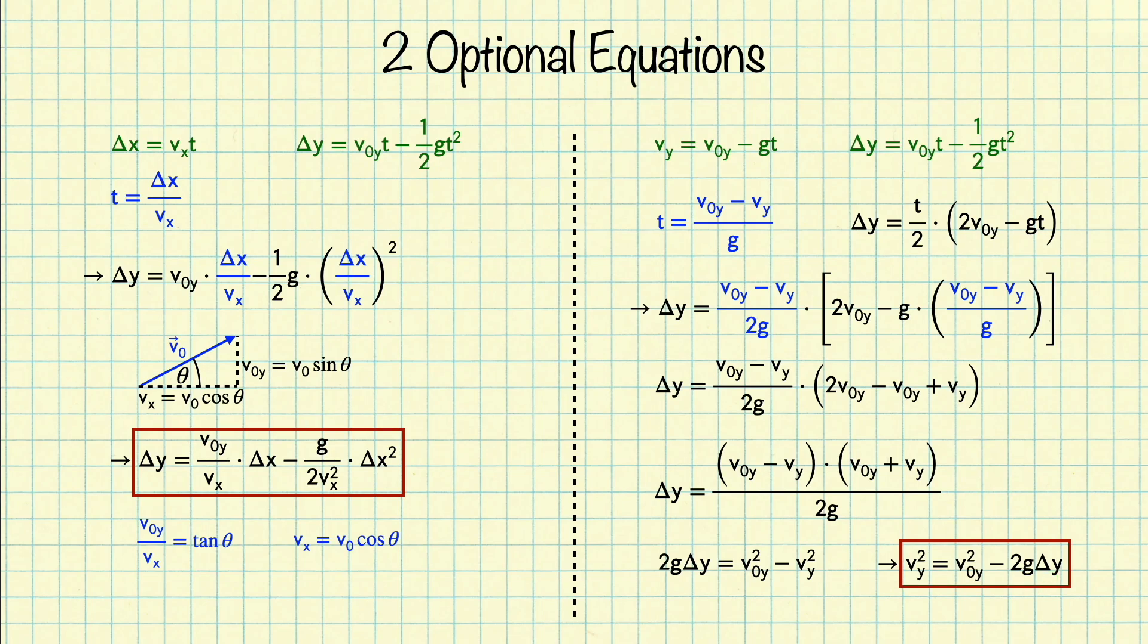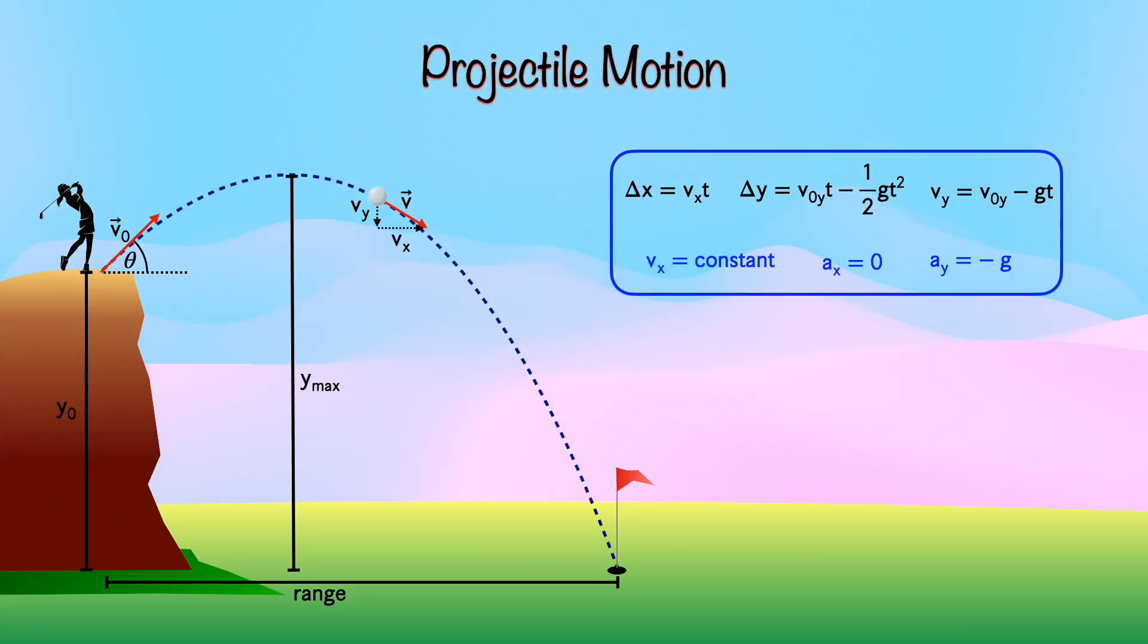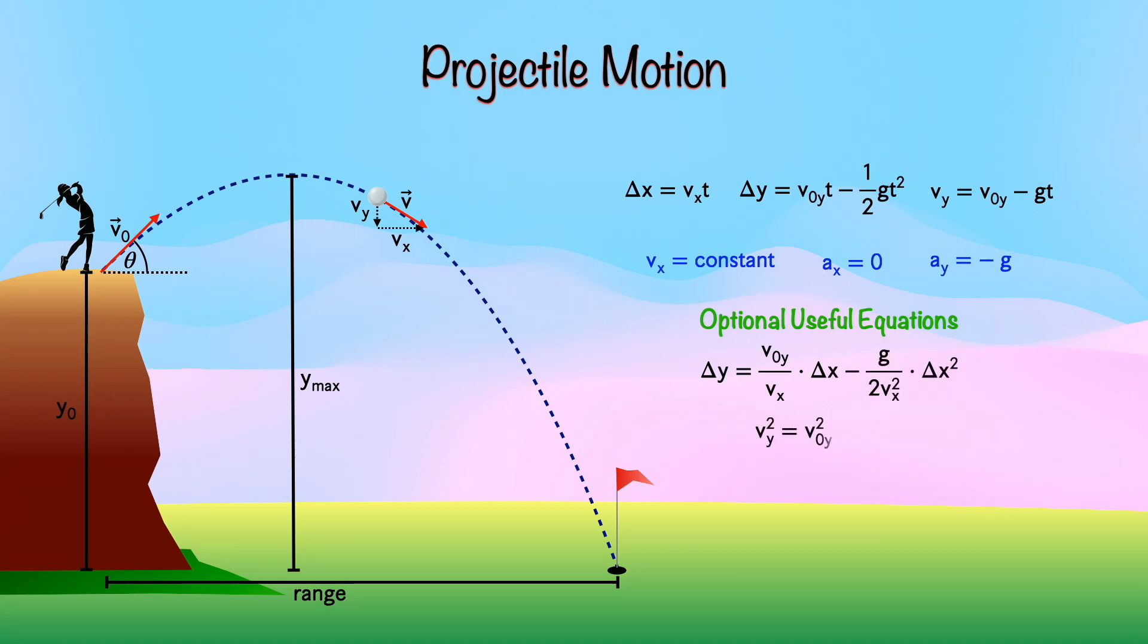So we can now go back to our set of equations for projectile motion, and we can add our two optional equations. And again, remember, you do not need these to solve projectile motion problems. They are useful because they might save you the step of eliminating time in problems that don't involve time. Now, if you have a cheat sheet, this is the maximum amount of equations you should be writing down for projectile motion. I strongly discourage you from writing anything else.